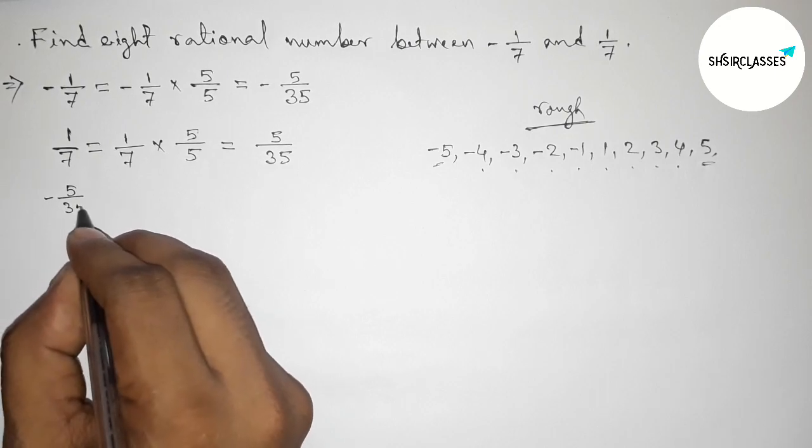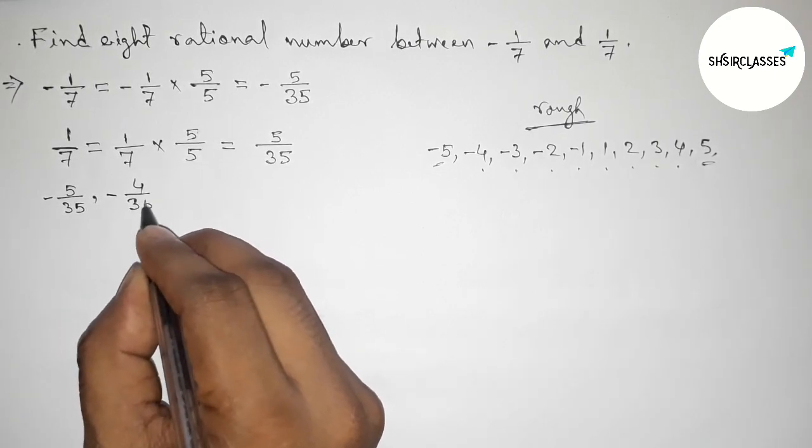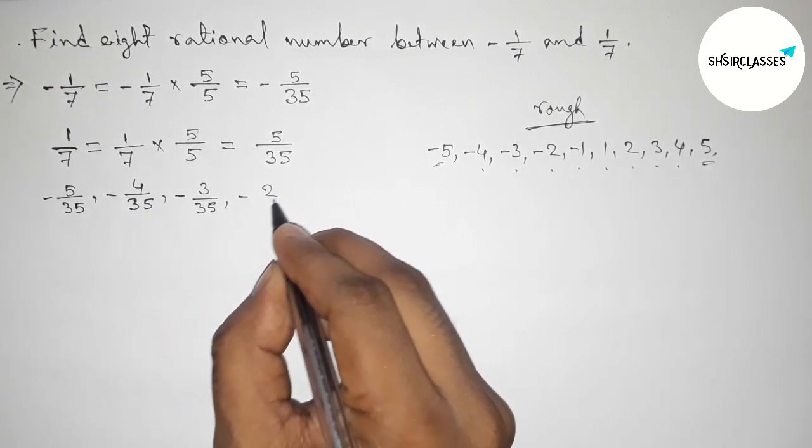write down here all the rational numbers: -5/35, then -4/35, then -3/35, then -2/35,